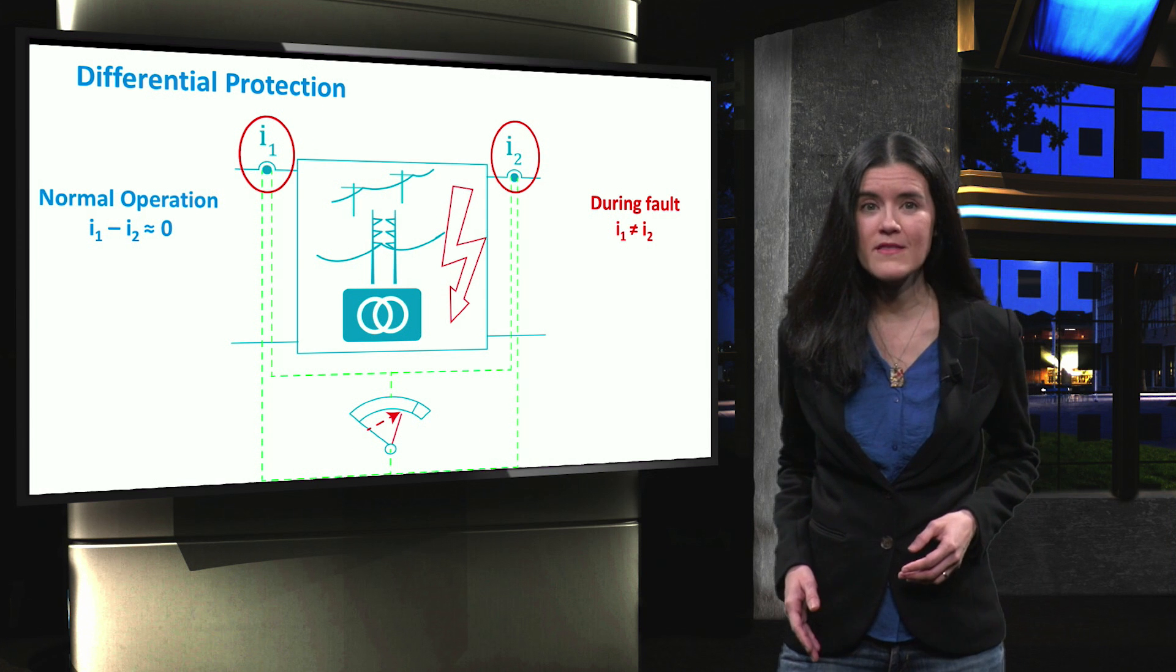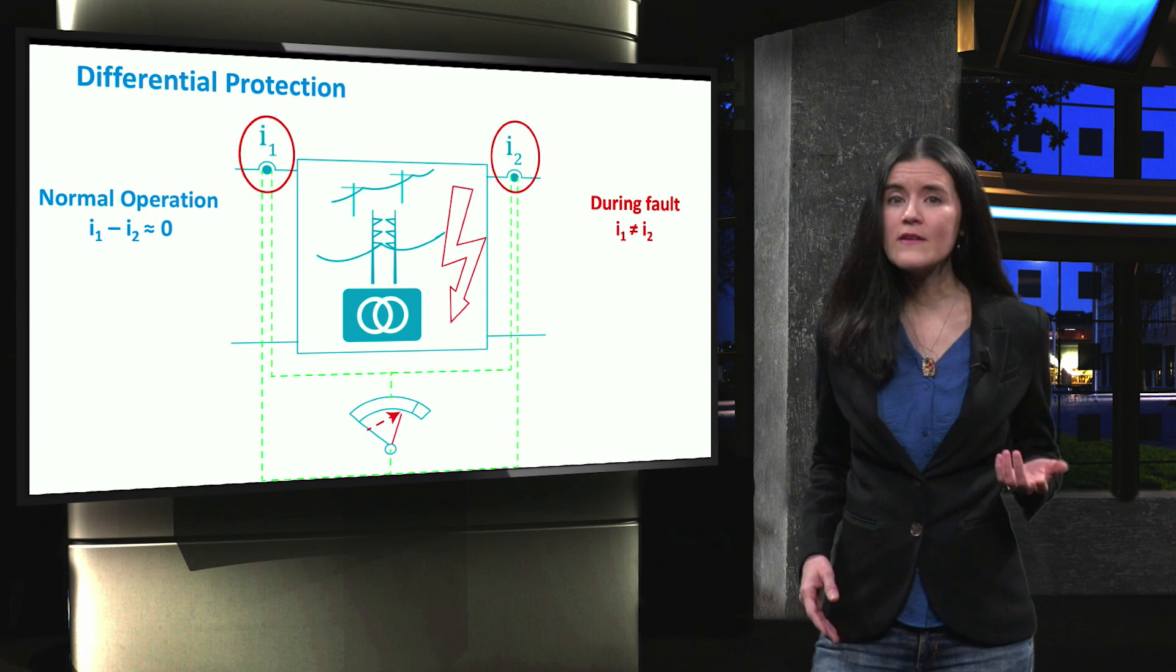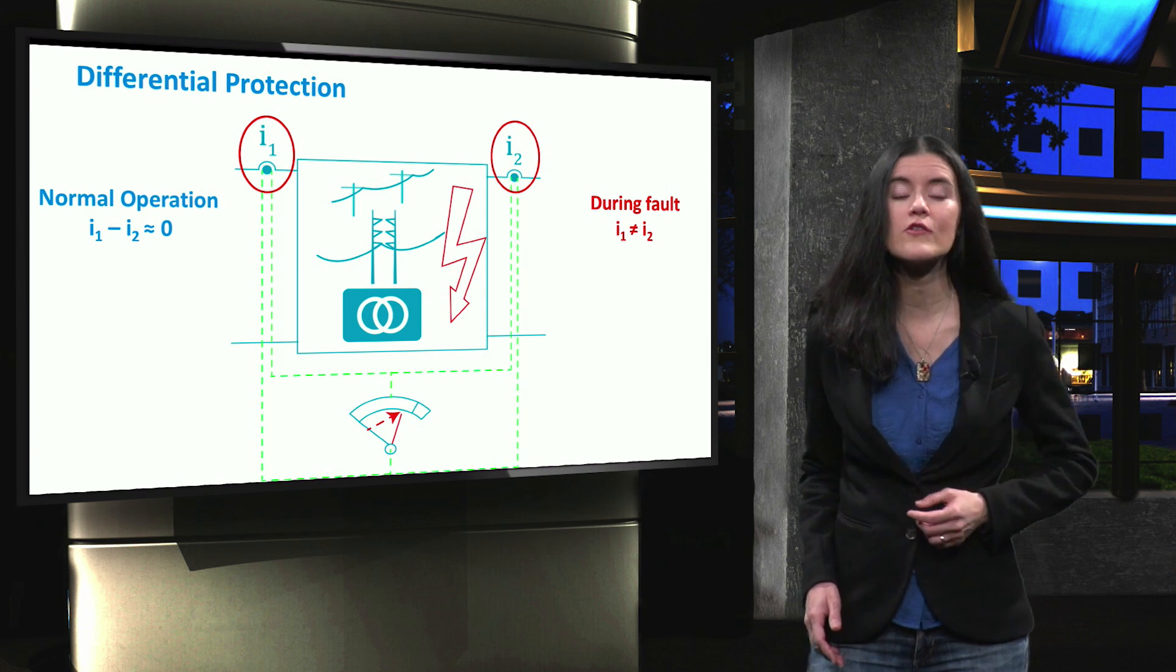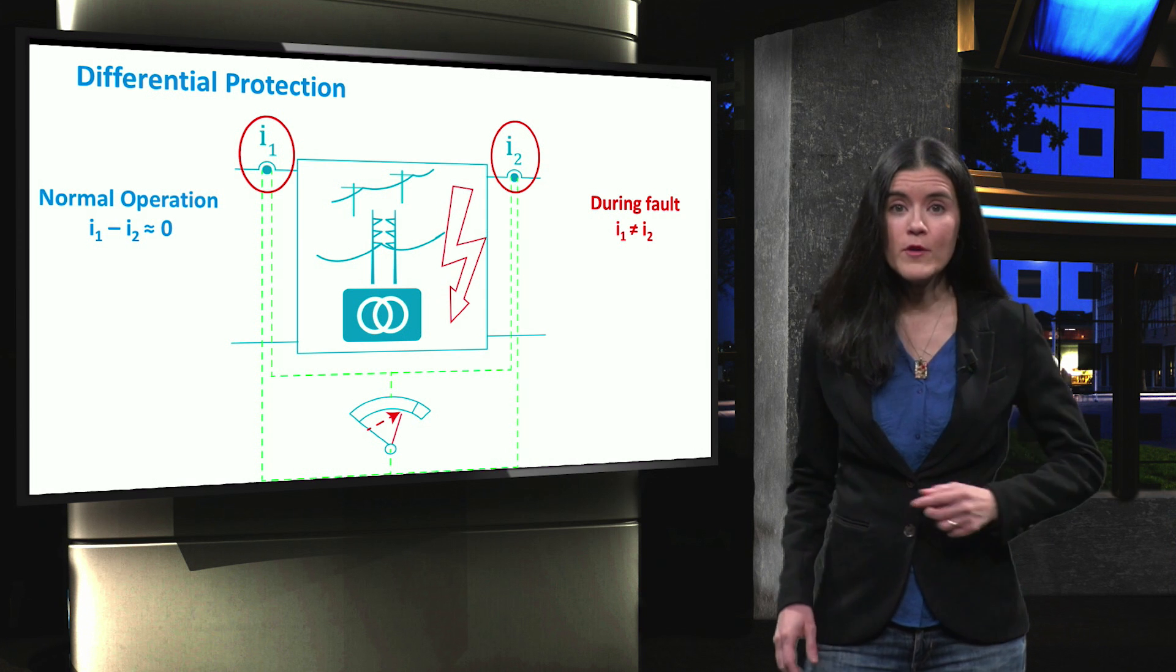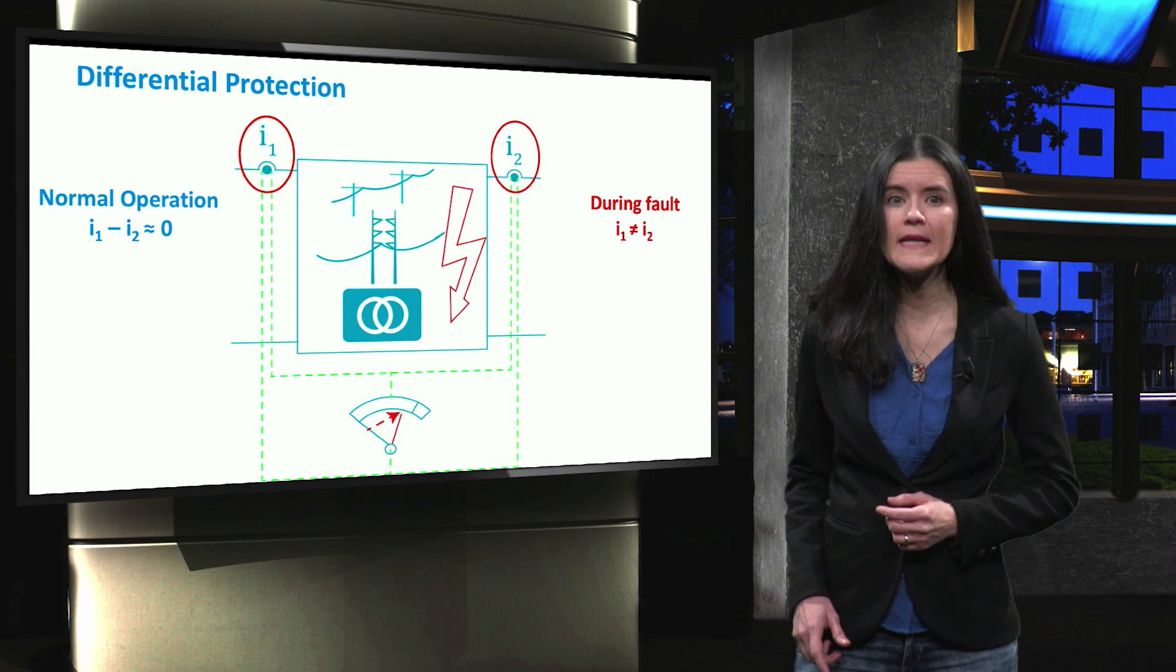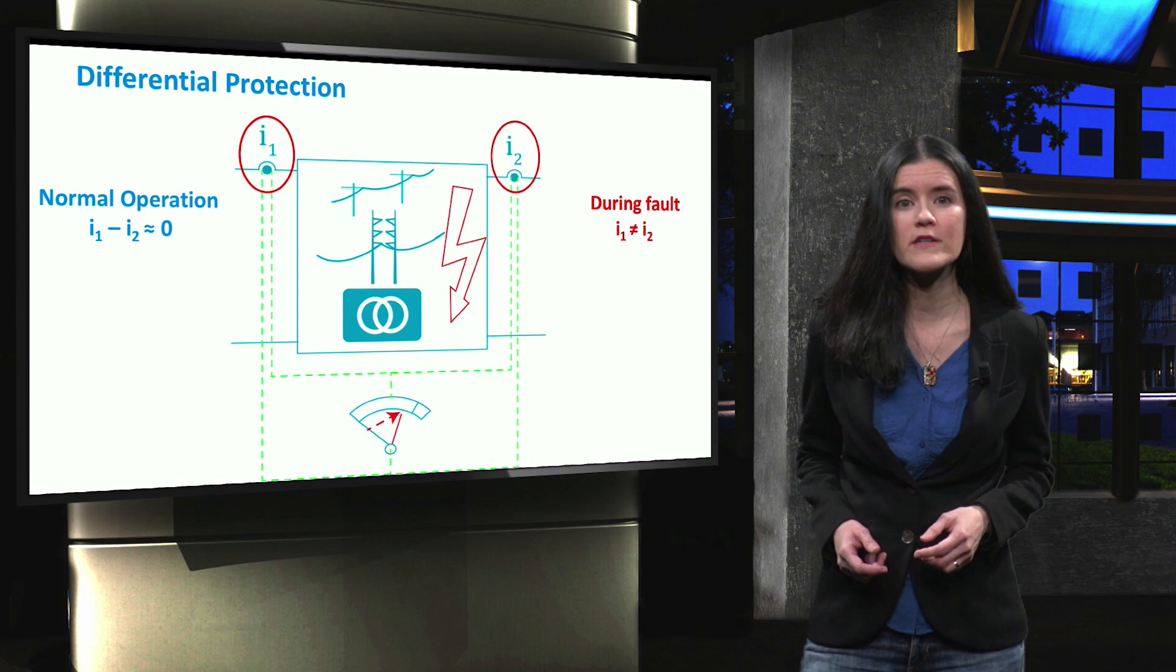Although this protection method has high selectivity, it relies on the communication network to transmit the measured currents to the control logic. As the communication network is also subject to failures, a backup protection is usually needed in addition to the differential protection, causing a great increase in the cost of this method.